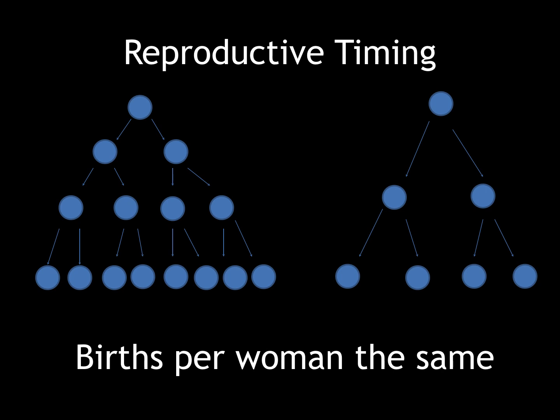This is possible due to reproductive timing. If one of the women is having her two children when she is 15 and 17 years old, she will be able to have many more offspring in her family than a woman who waits until she is 30 to have her two children, and her two children wait until they are 30 to have their two children.